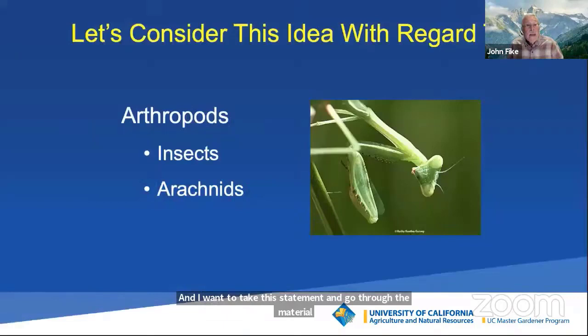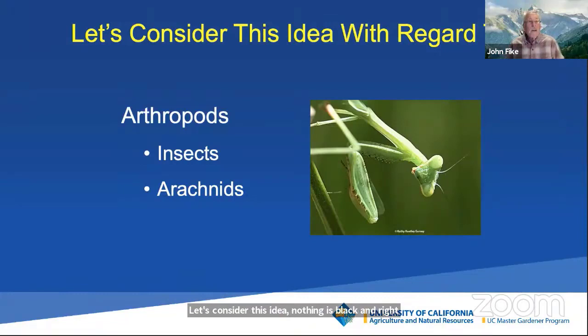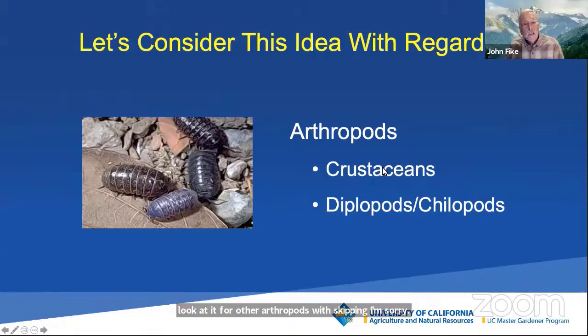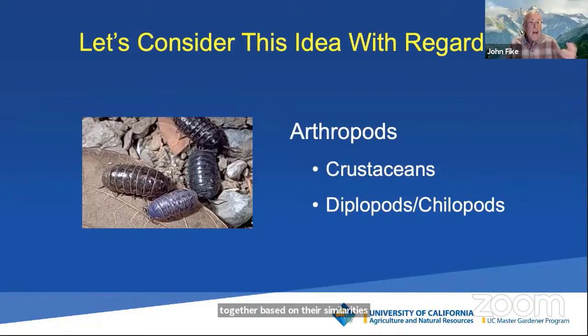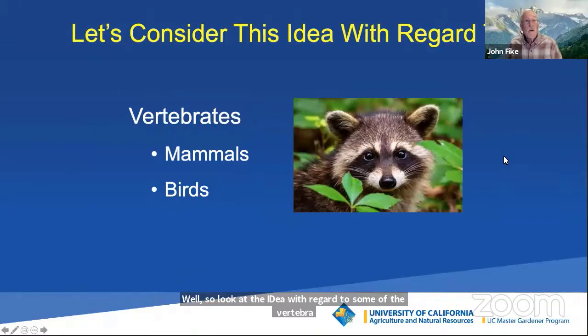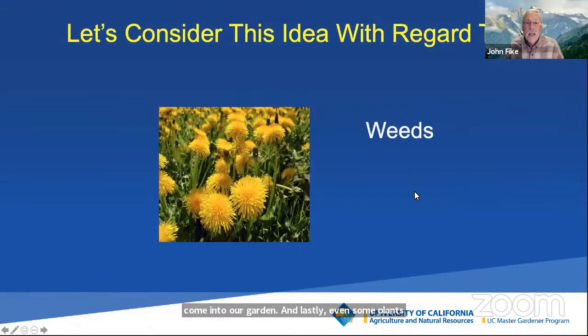Nothing is black and white with regard to the arthropods. Arthropod means jointed foot - jointed legs, heavily jointed legs of the insects, the arachnids which are the spiders, and the crustaceans. These are just class names. Scientists have a field of study called taxonomy, where they organize and put animals or plants together based on their similarities. We'll also look at some vertebrates that come into our garden, and even some plants that can be looked at from the perspective of friend or foe.